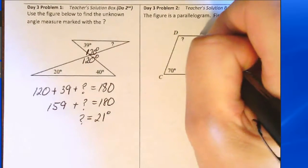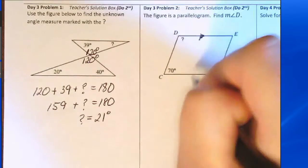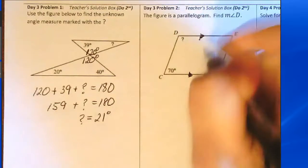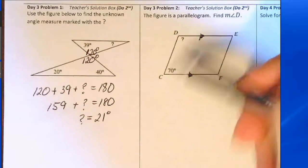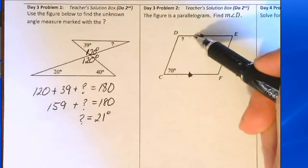Because this is a parallelogram, opposite sides are parallel. These are parallel. This side here is a transversal connecting those opposite sides.